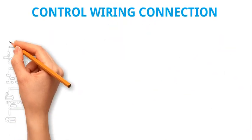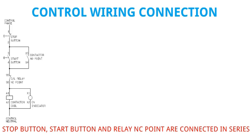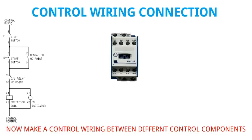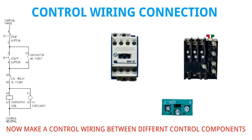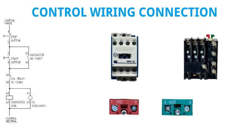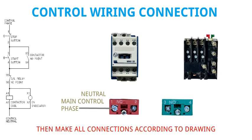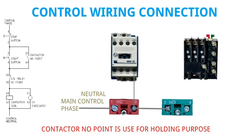Now look at the control wiring diagram. The stop button, start button, and relay NC point are connected in series. The contactor NO point is connected in parallel with the start button. Now make the control wiring between the different control components. Connect the NC element with the main control supply, then make all connections according to the drawing.